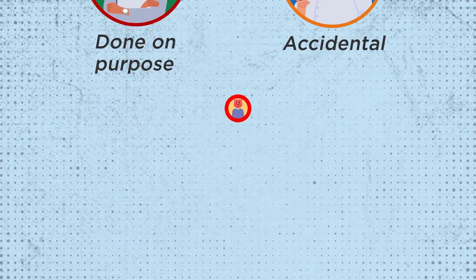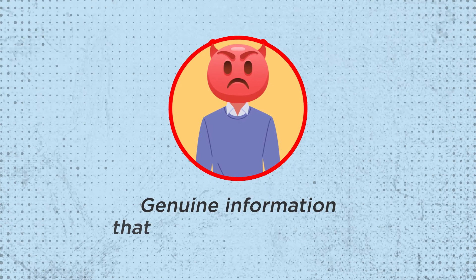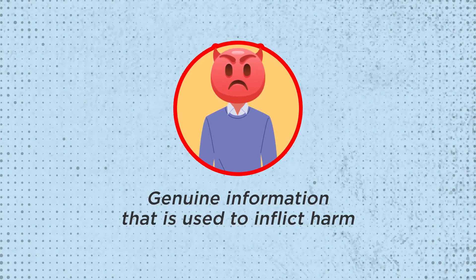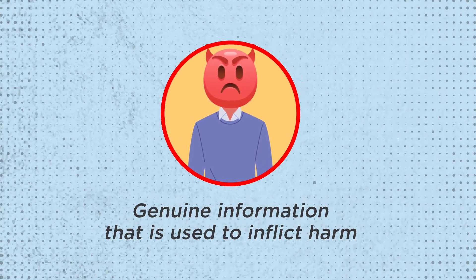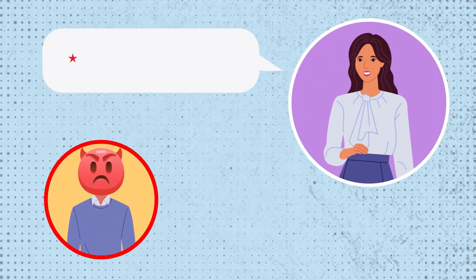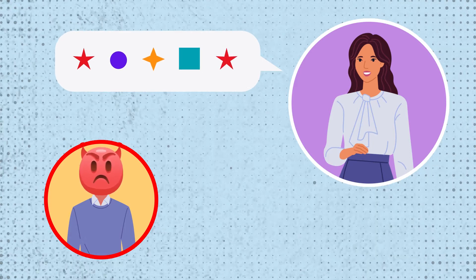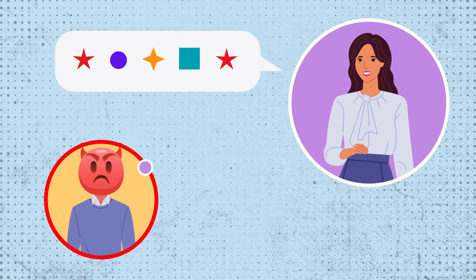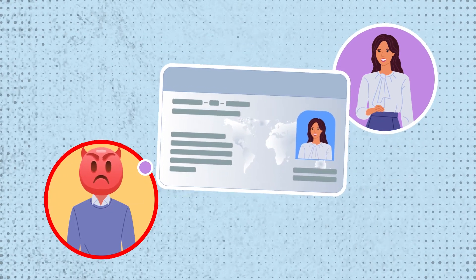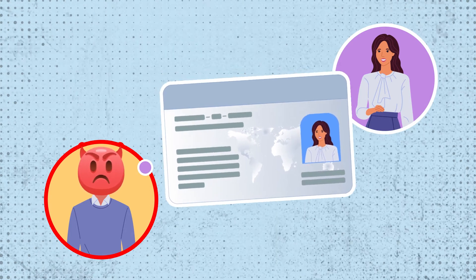On the other hand, malinformation is genuine information that is used to inflict harm. An instance of malinformation is doxing, where an individual's personal details are revealed to the public with no justification.